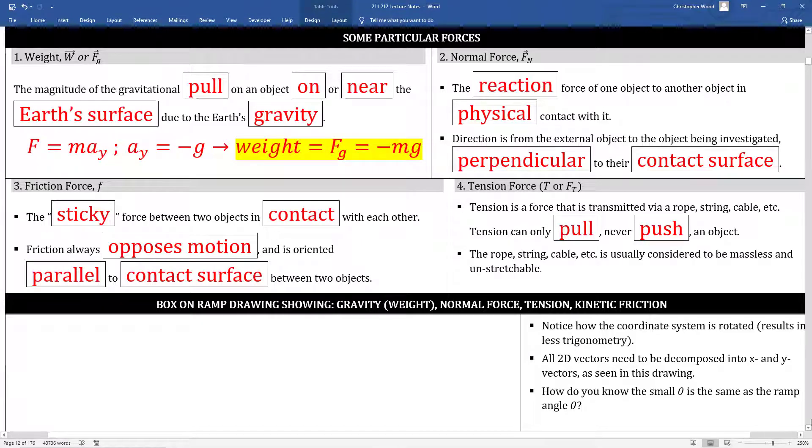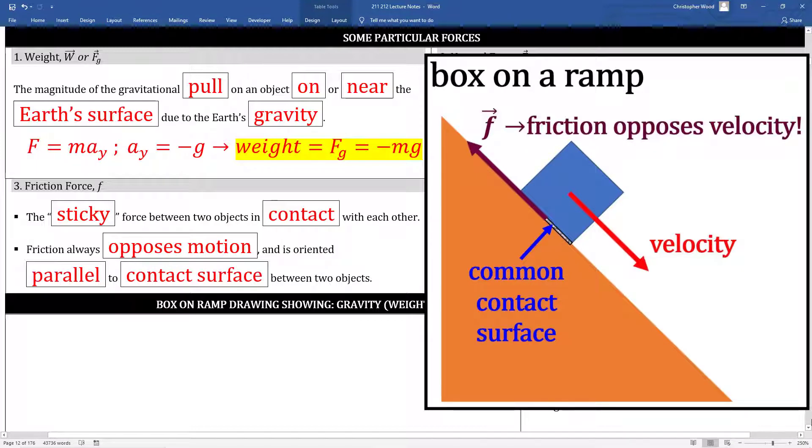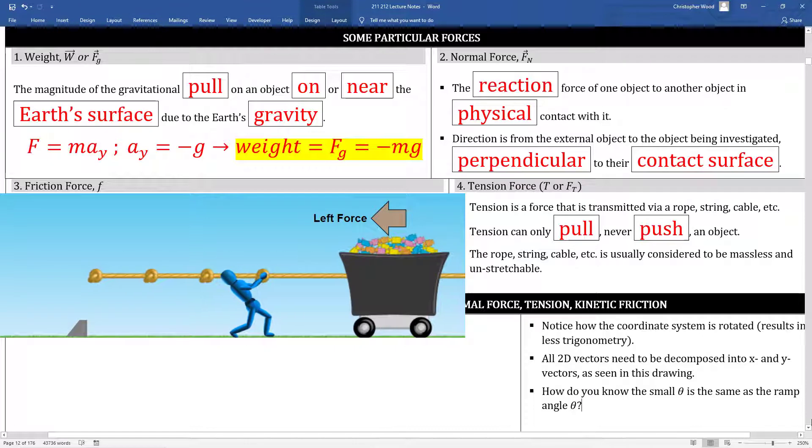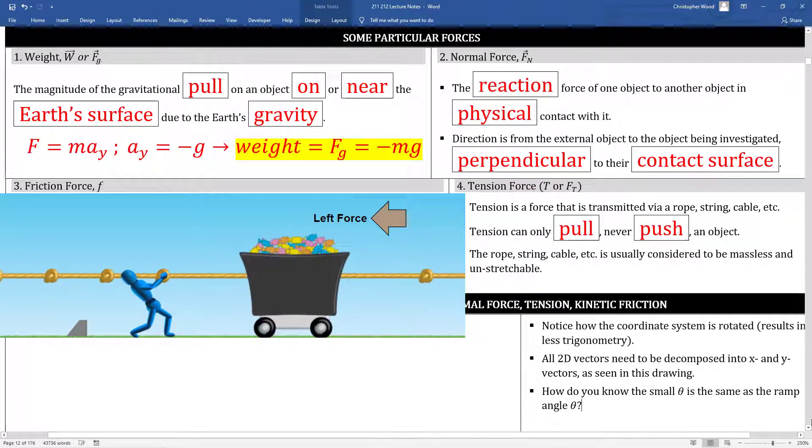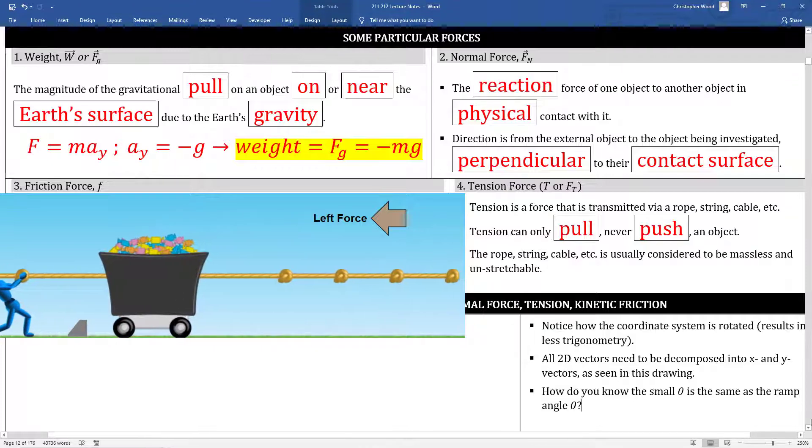Box three is the friction force. There are two kinds of friction, kinetic and static. Again, keep this visual in mind as you read the description. The friction force is actually based on the electromagnetic force, and it's the sticky force between two objects in physical contact with each other. This is a useful bullet. Friction always opposes motion and is oriented parallel to the contact surface between the two objects. Box four, tension is a force that's transmitted via a rope, a string, a cable, etc. Tension can only pull an object. Tension can never push an object.